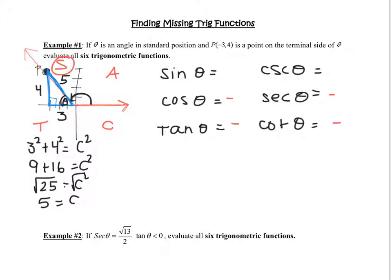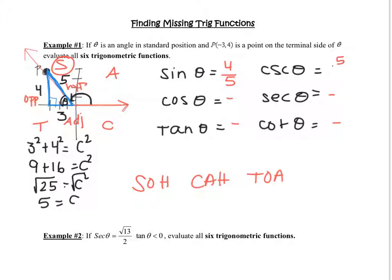Using SOHCAHTOA: sine is opposite over hypotenuse, so 4/5. Cosecant is the reciprocal: 5/4. Cosine is adjacent over hypotenuse: 3/5, but it's negative, so −3/5. Secant is the reciprocal: −5/3. Tangent is opposite over adjacent: 4/3, also negative, so −4/3. Cotangent is the reciprocal: −3/4. Those are all six trig functions evaluated.